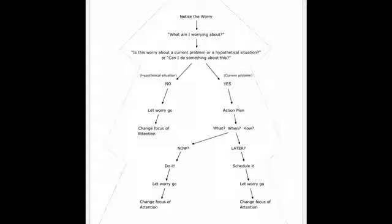The left hand side of the worry tree shows us what to do when the worry is a hypothetical situation, and when we cannot do something about this worry. This illustrates when we have a hypothetical worry or situation, and we can't do anything about this, we should let the worry go and change the focus of attention.